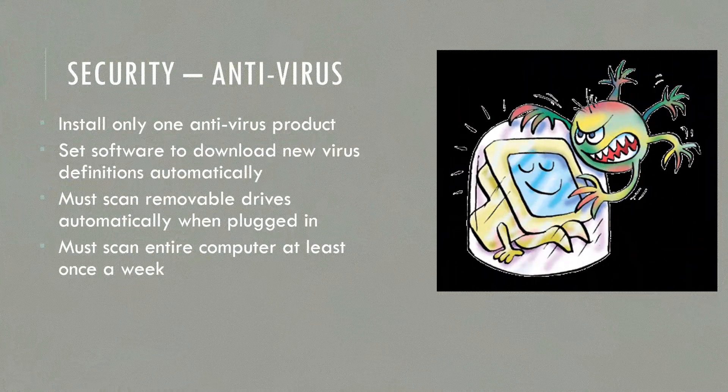For security, we need an antivirus. Although Windows comes with its own antivirus, if you want better security, you need to install an antivirus — and only install one. You have to set the software to download new virus definitions automatically. These get downloaded from the internet every day because people keep writing new viruses. You have to scan removable drives; for example, if your friend plugs in a flash drive, it should automatically get scanned. And you should scan the entire computer at least once a week.